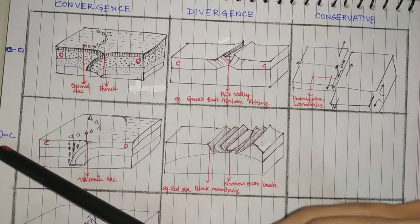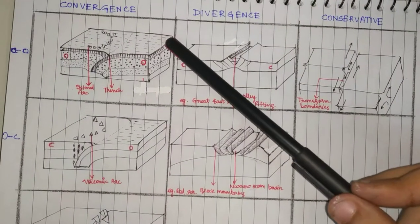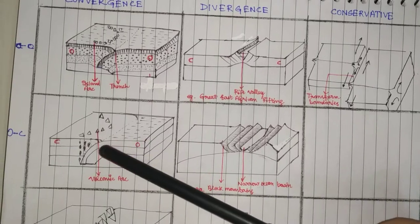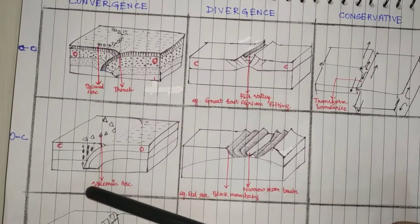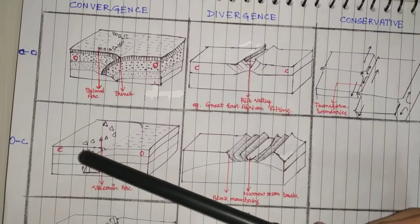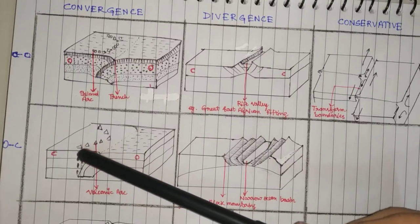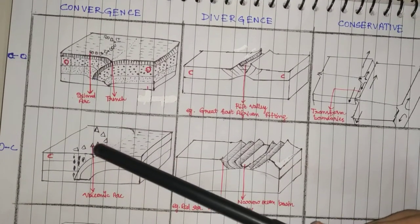If it's an ocean-continent convergence, the ocean plate, since it's heavier, subducts, and on the continent a volcanic arc is formed.